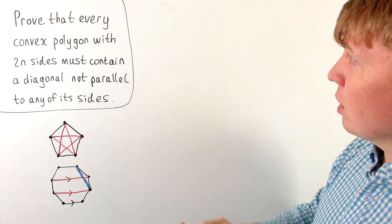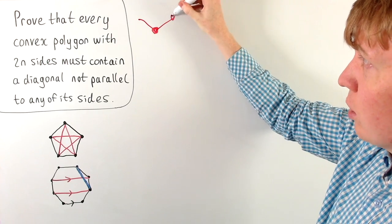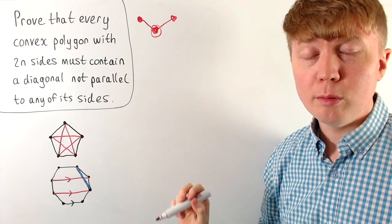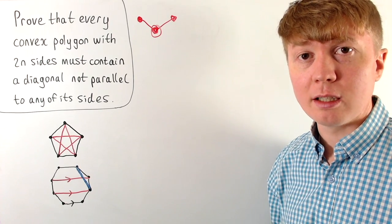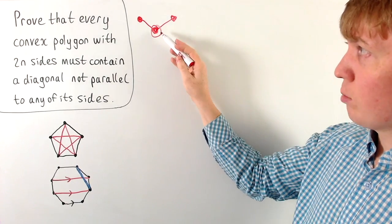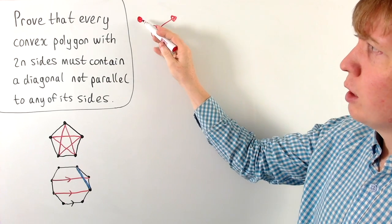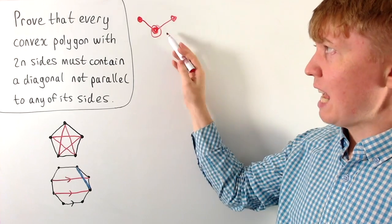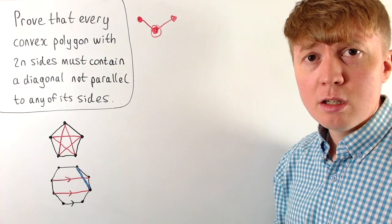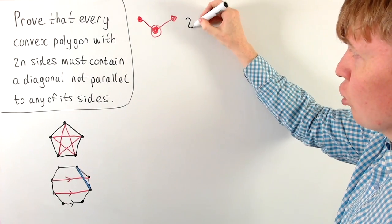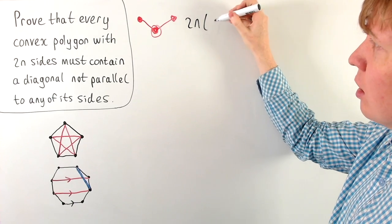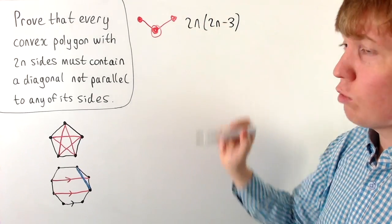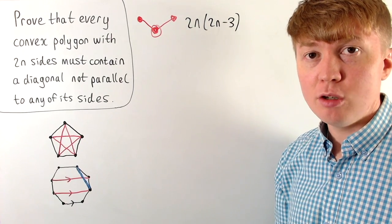Let's start by finding the total number of diagonals in our 2n-sided polygon. We can think about this from the point of view of one of our vertices. This vertex is going to form a diagonal with every other vertex in our polygon, with the exception of itself and either of its two neighbors, because those connections are edges rather than diagonals. So for each of the 2n vertices, it's going to form 2n minus 3 diagonals.